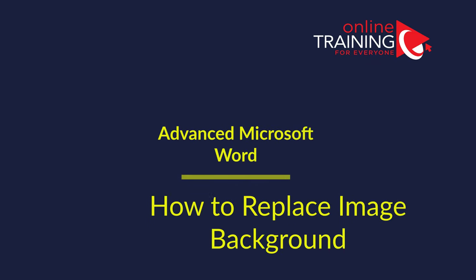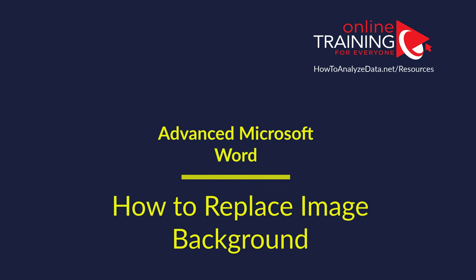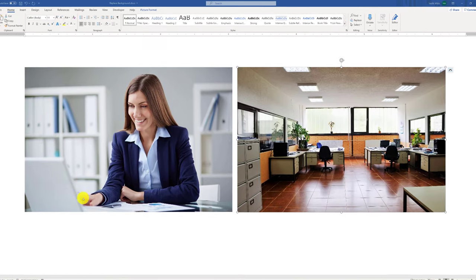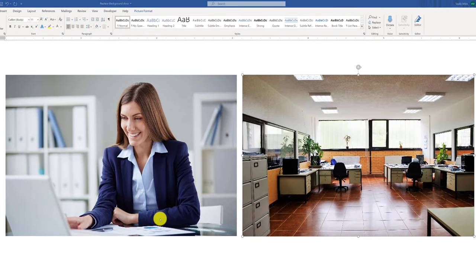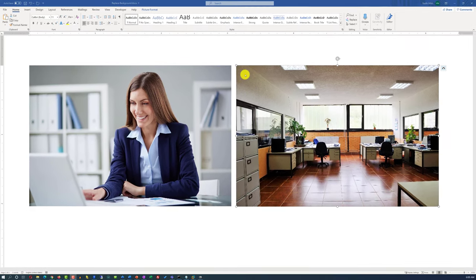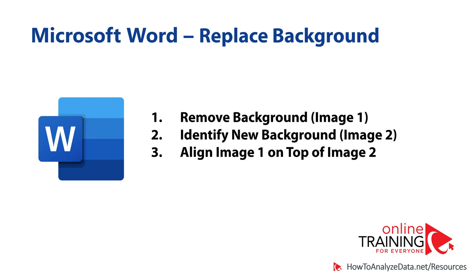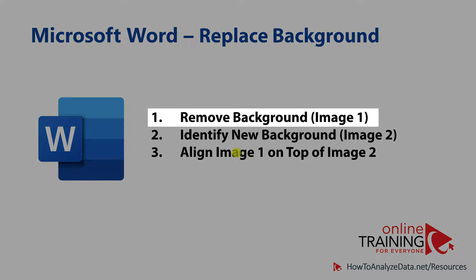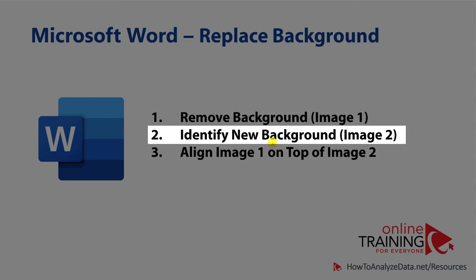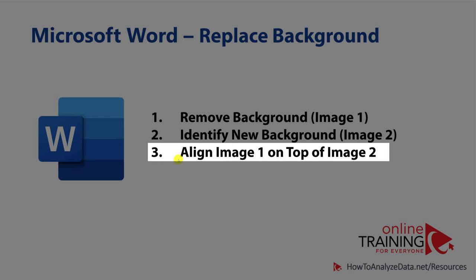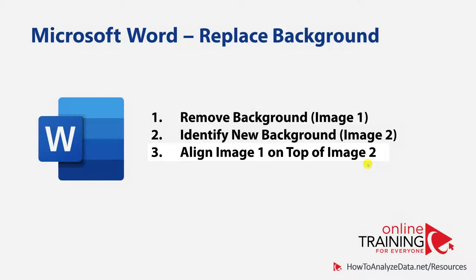A lot of times you may need to replace the background for an image in Microsoft Word. For example, you may have an image of a person sitting in an office, but you'd like to put her into a different background represented by a second image. We can accomplish this in three steps: first, remove the background on image one; second, identify the new background, which is image two; and third, align image one and put it on top of image two.